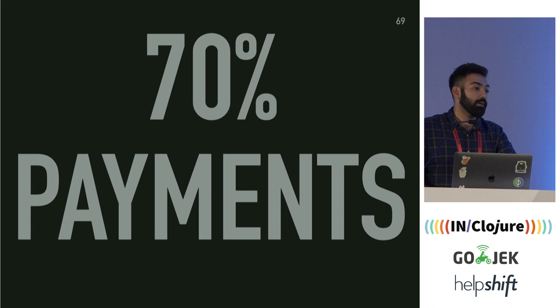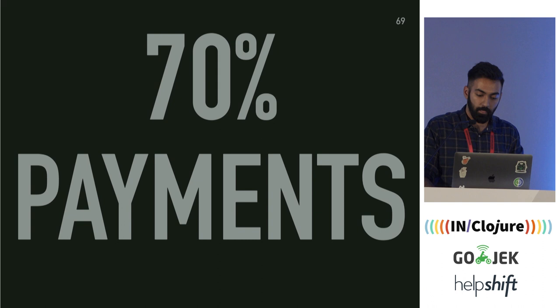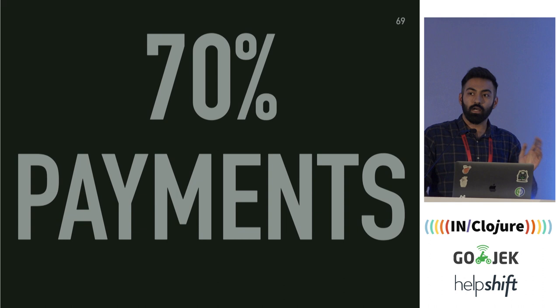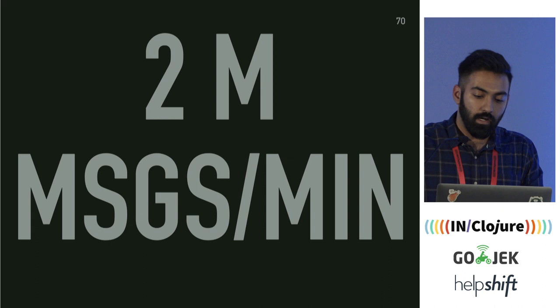The actor that introduced error handling in Ziggurat handles more than 70% of all the payments that go through Gojek, working at a load of around 41,000 messages per minute. That's not even the highest load — some of our actors handle more than 2 million messages per minute and run fine in production.